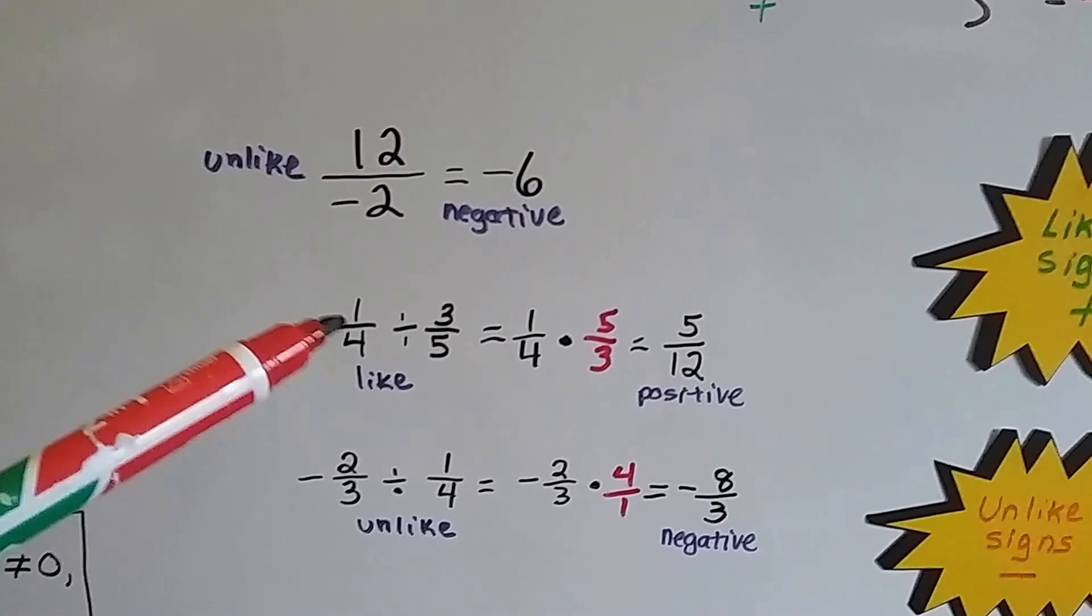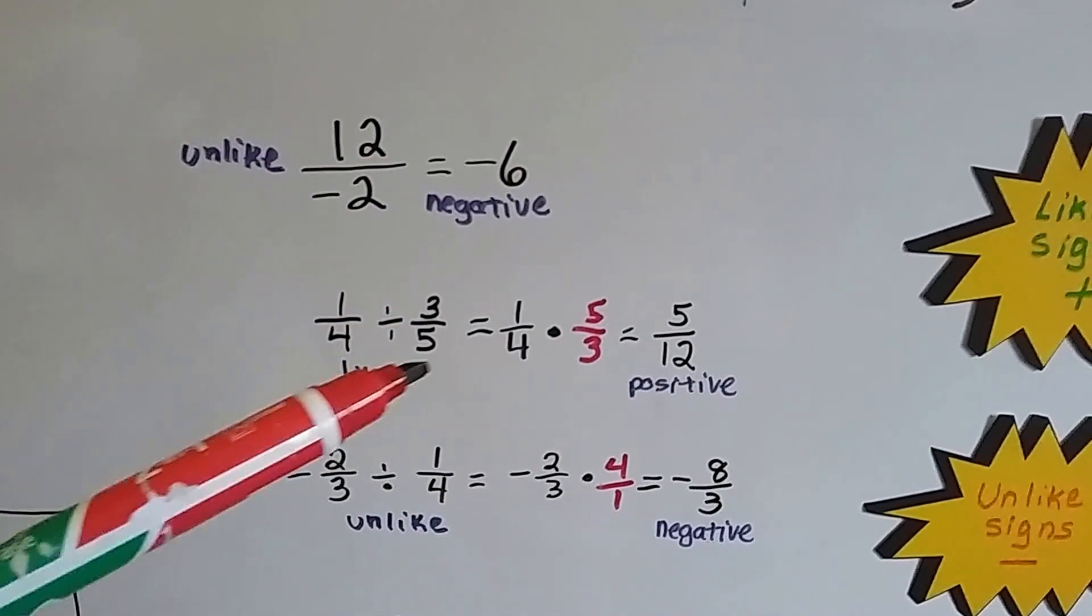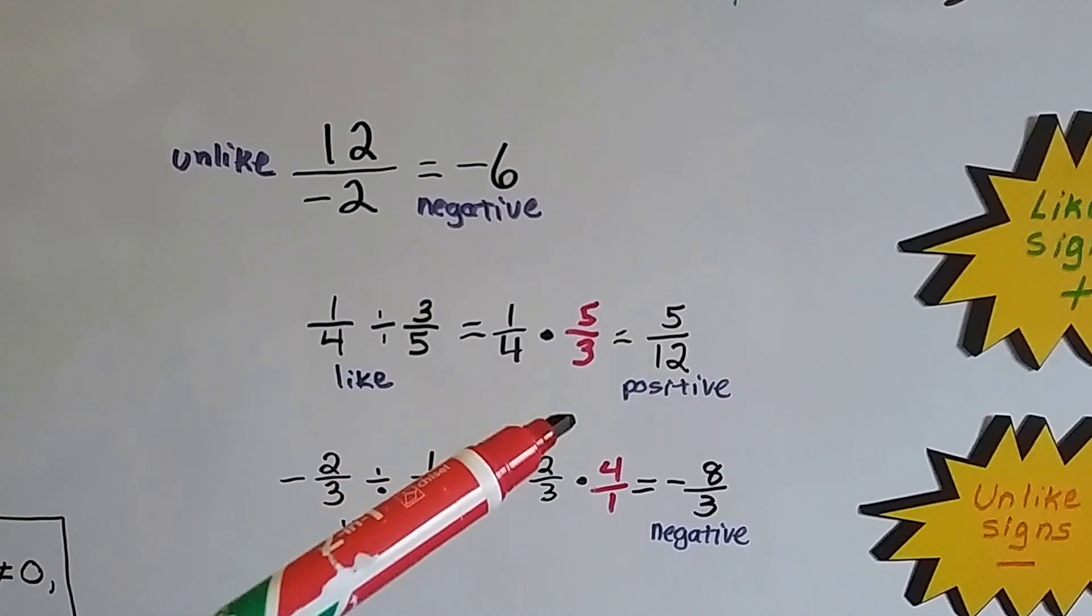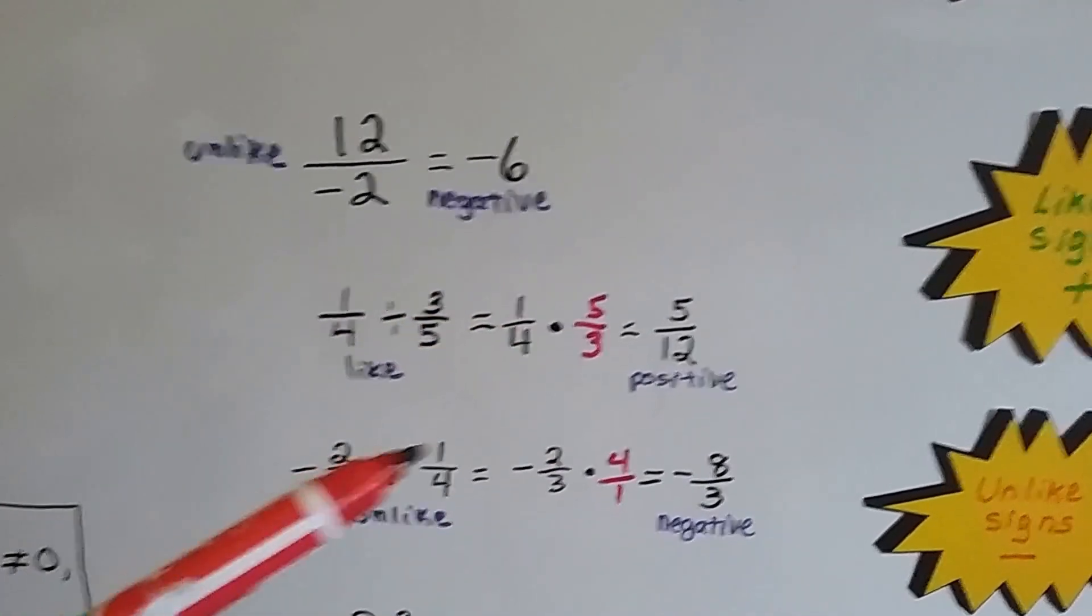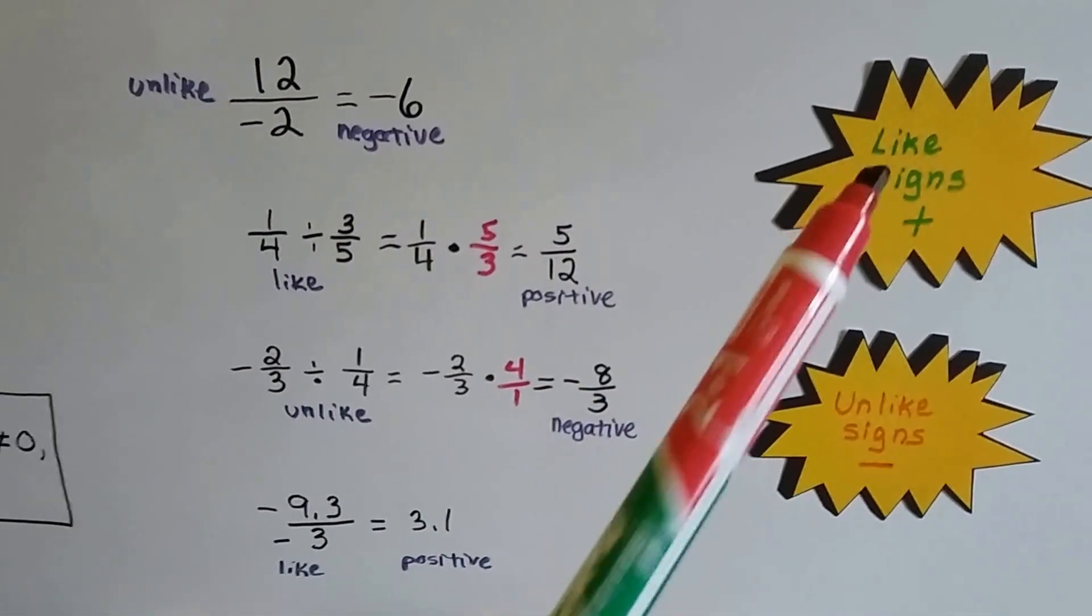For this one, they're both positive. We have 1 4th divided by 3 5ths. These are like signs. We're going to flip this 3 5ths around to its reciprocal 5 3rds, and we're going to multiply straight across as 5 12ths. And it's positive because they're like signs. Like signs are positive.